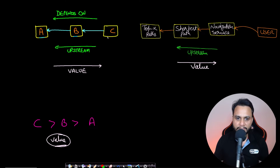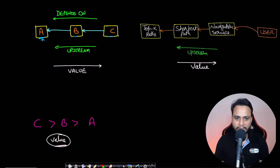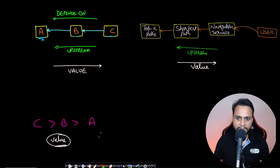Now let's understand in terms of our systems. Say you have multiple components A, B, and C — C is dependent on B, and B is dependent on A. For example, you have a main function and a component making use of a utility function. Moving from right to left is upstream, and the independent component is the one that doesn't depend on any external component. C is dependent on B and B is dependent on A, just like the paint assembly was dependent on the assembled parts and the assembly depended on the collection of parts.